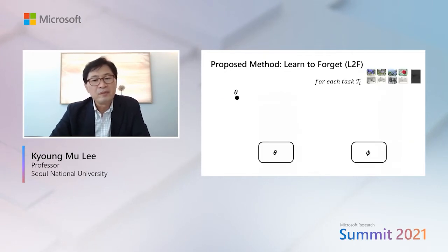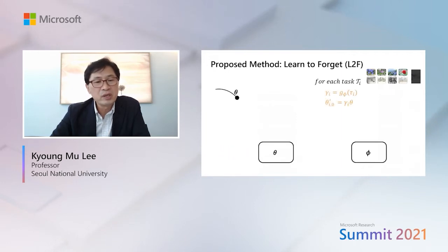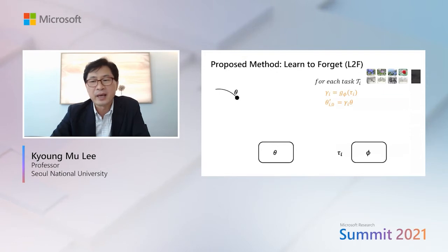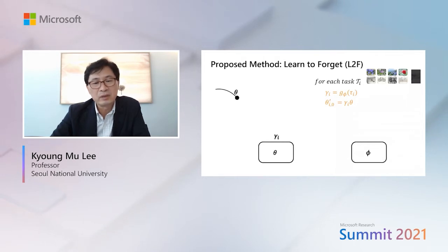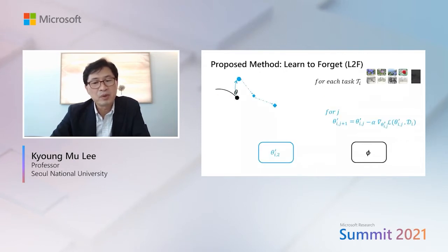Here we show the L2F mechanism in animation. From the shared initialization, we use support examples to compute task embedding — in this case, gradient tau_i. G_phi then uses this task embedding to generate attenuation parameter gamma_i. The generated gamma_i is then used to attenuate the initialization theta. After attenuation, the fine-tuning process is the same as in other general optimization-based meta-learning frameworks.